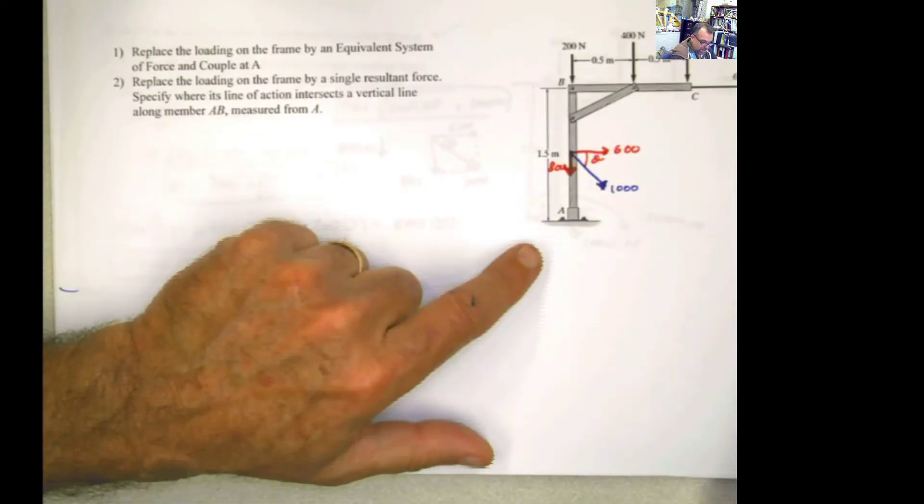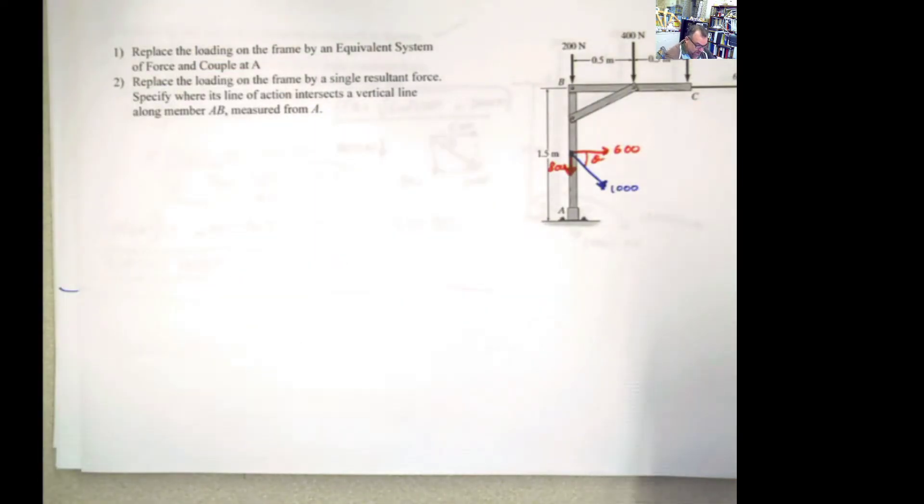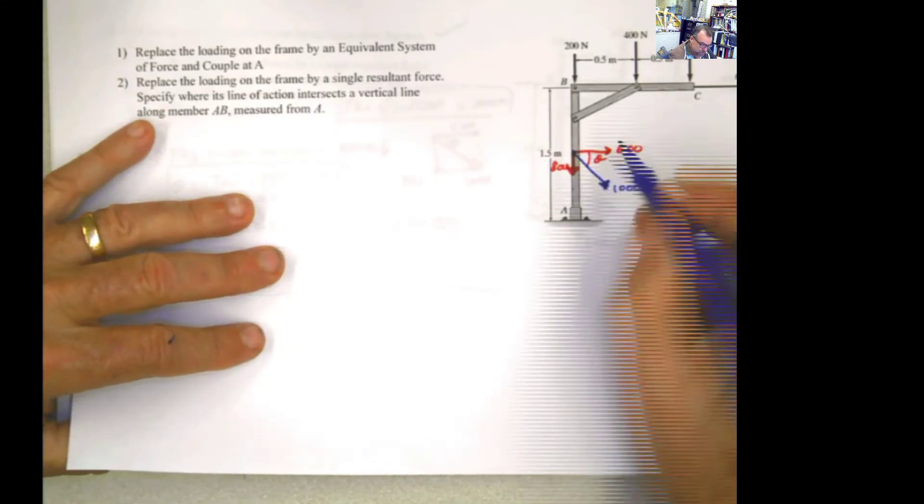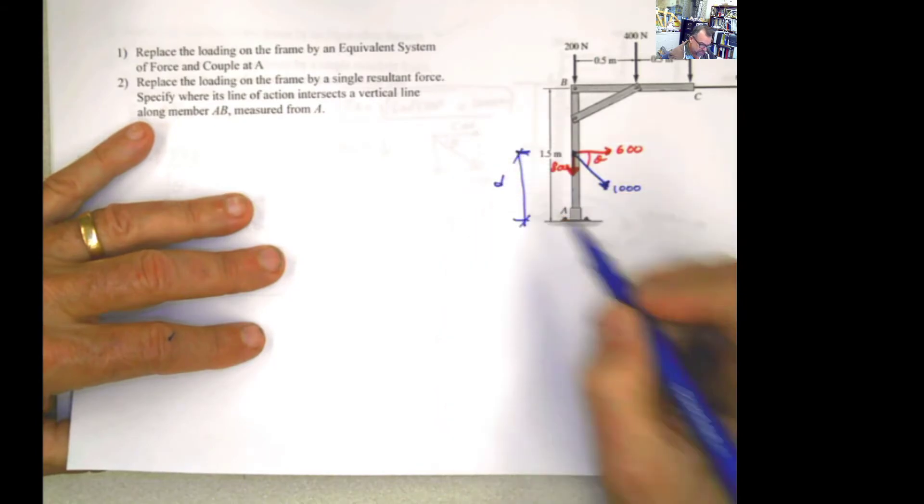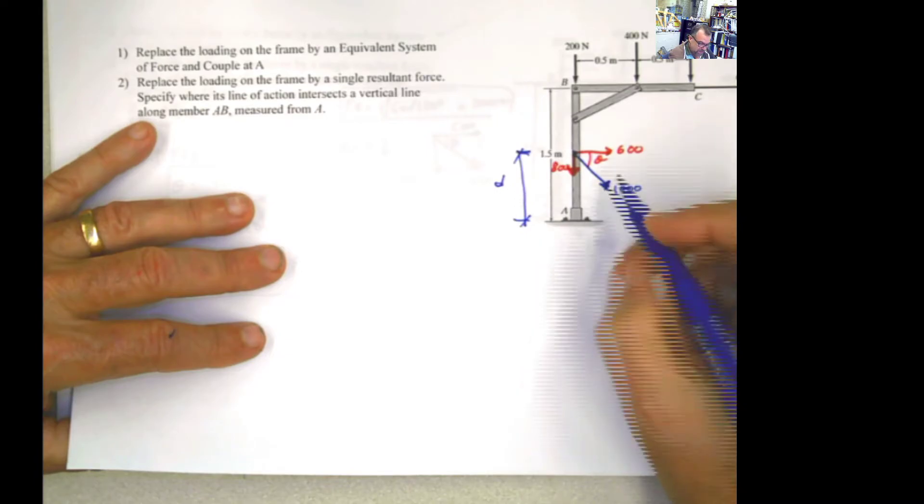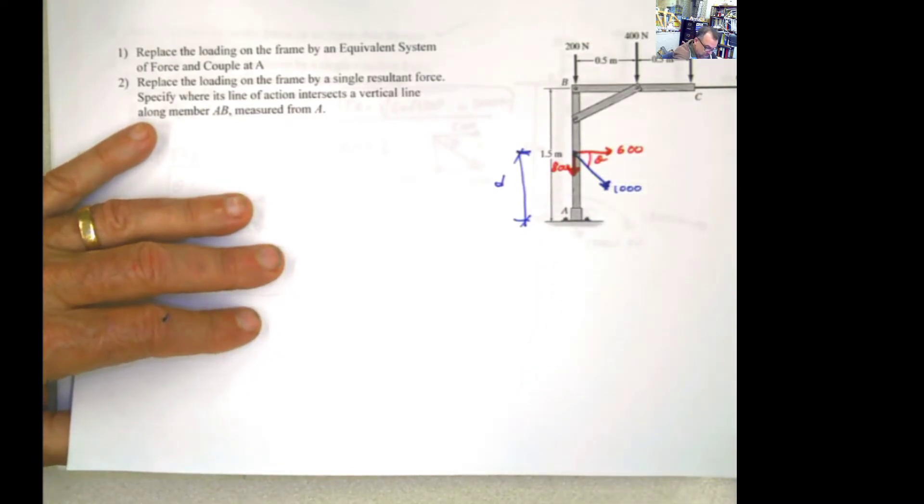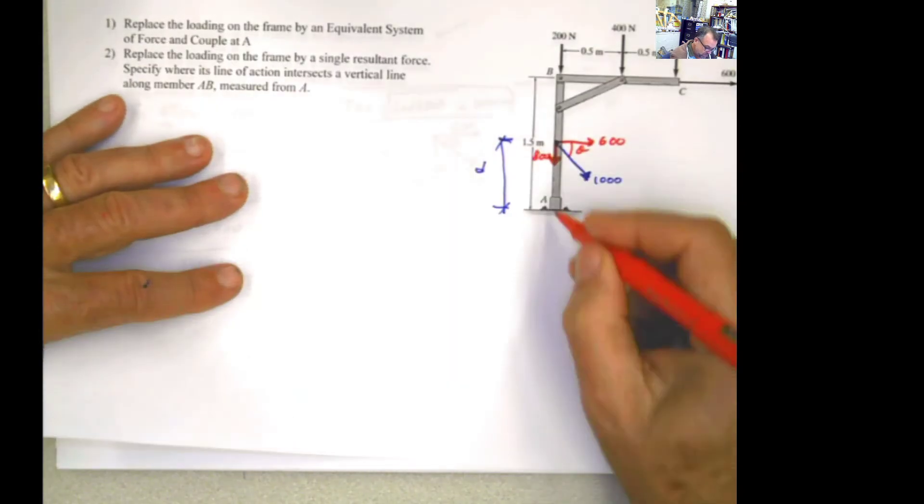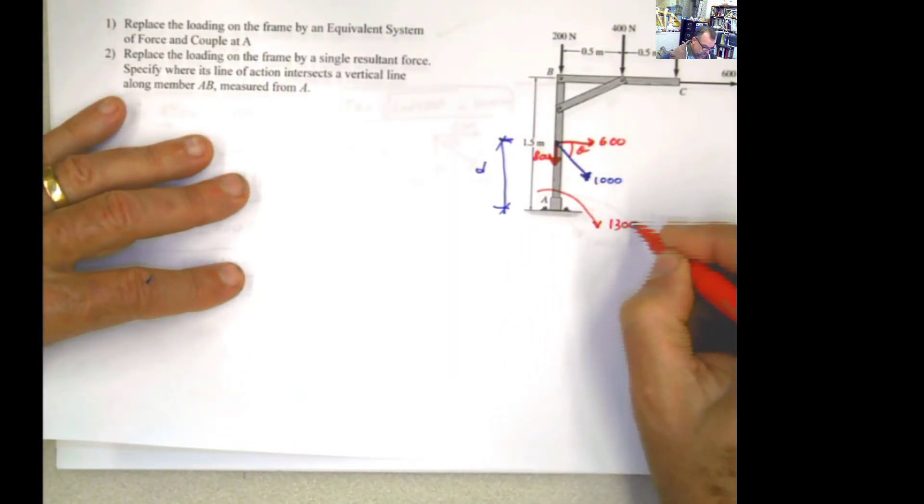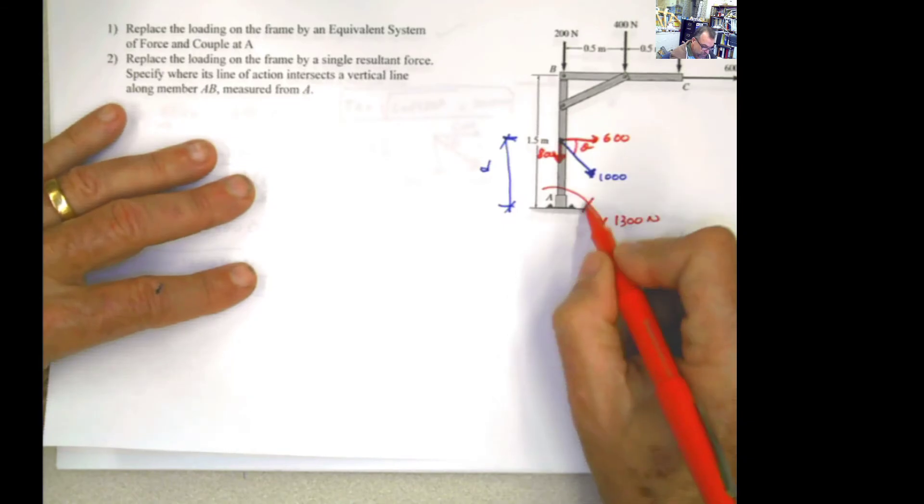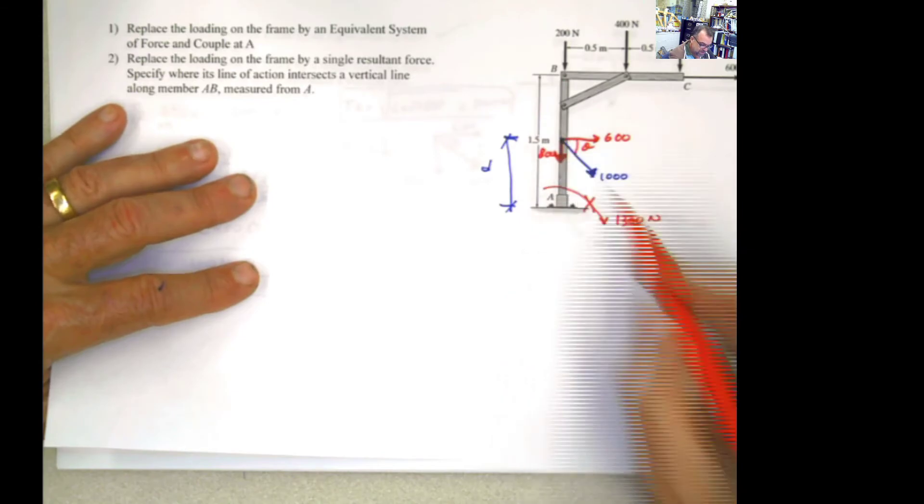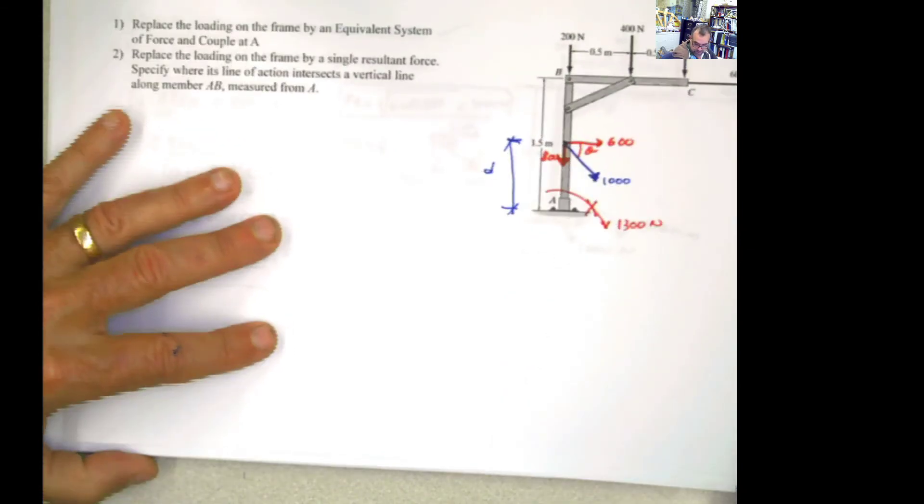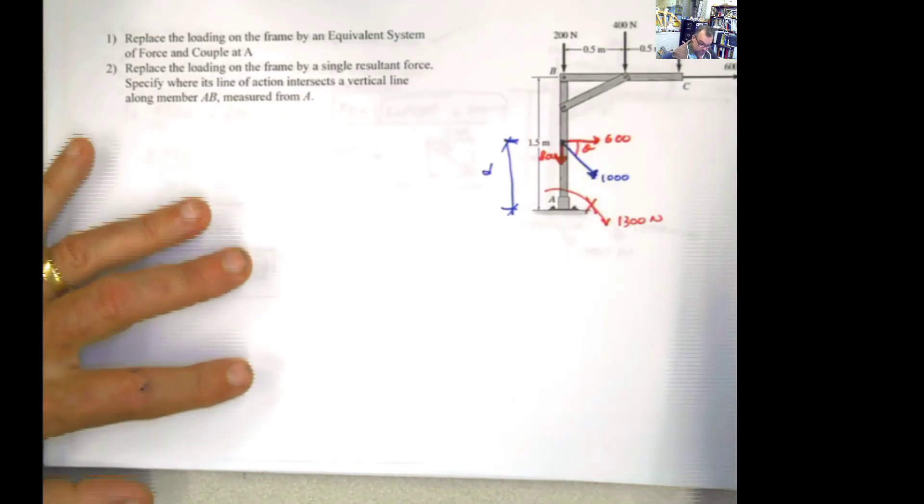Now, the second part of the problem, what it's telling you is, I want to place this force somewhere. And I don't know what somewhere is. So I'm going to call that somewhere D from the point A. And when I put that force over there, it has to produce the same moment as the moment that we calculated before. Remember, we calculated this moment of 1,300 newtons. It's not that I'm going to put that moment there. But the location of this force at that distance, D, has to produce that moment over there.